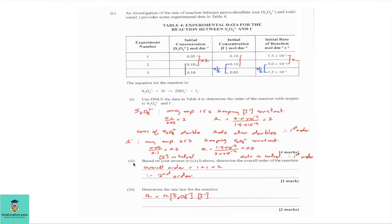Part C2 — determine the overall order of the reaction. We add both individual orders: first order plus first order equals second order overall. Part C3 — determine the rate law. Rate is directly proportional to reactant concentrations, so the rate law is: rate = k[S₂O₈²⁻][I⁻]. We do not show the exponent when it is raised to the power of one. This is the rate law for the reaction.